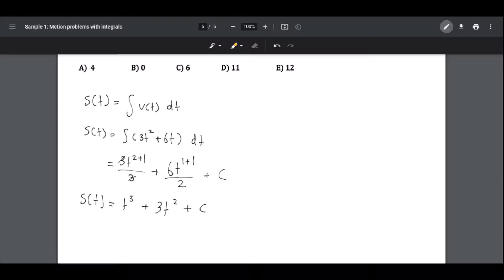So s(t), which is the position, is equal to 2, which is equal to t, which is 0, to the power of 3, plus 3t, which is 0, times 0, to the power of 2, plus c.